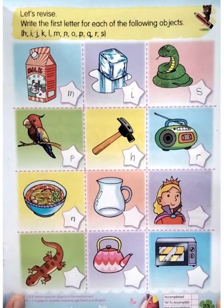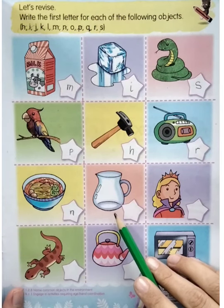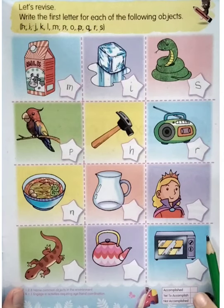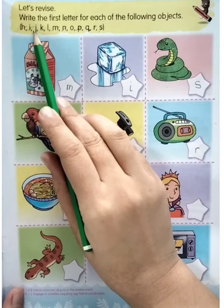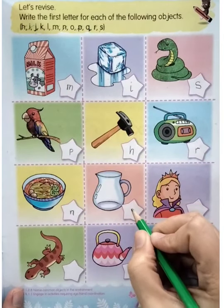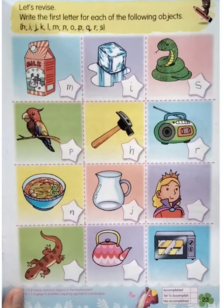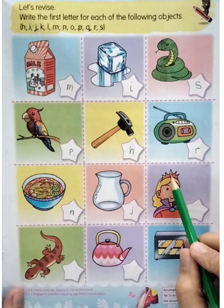Now the next one — what object is that? Very good — jack. So what is the beginning letter of jack? Very good — J. Find letter J. We write letter J in here. J for jack.